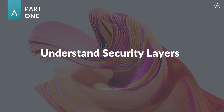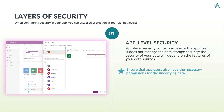When configuring security in your app, you can establish protection at four distinct levels. The first level is app-level security. App-level security controls access to the app itself; it does not manage the security of the data storage. The security of your data will depend on the features of your data sources. Ensure that users who have access to the app also have the necessary permissions for the underlying data.